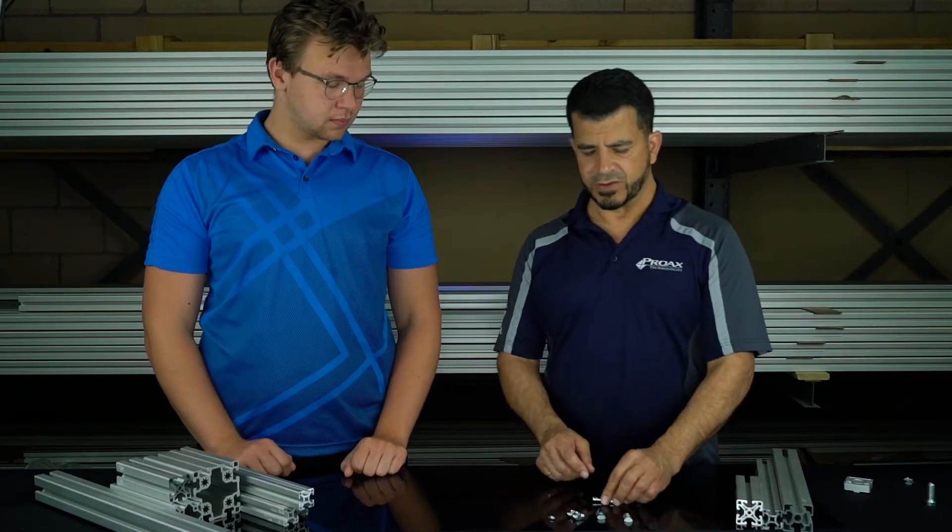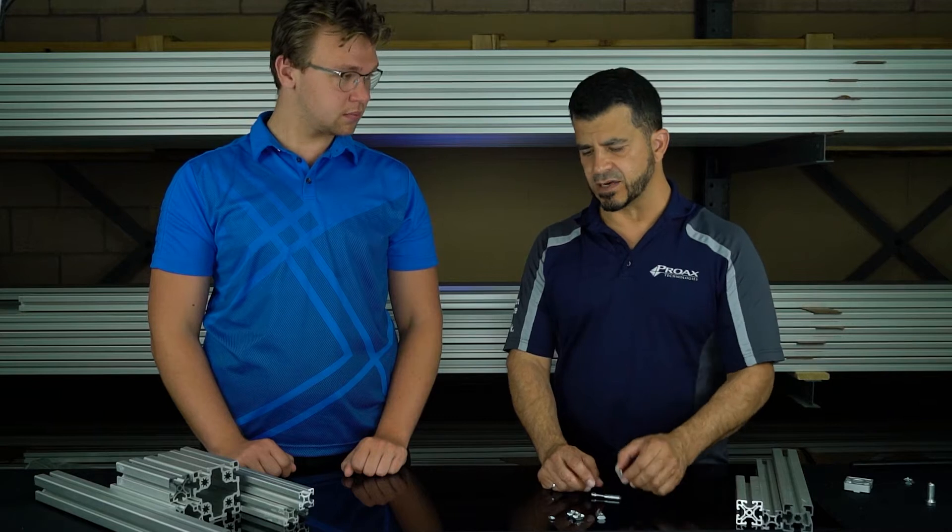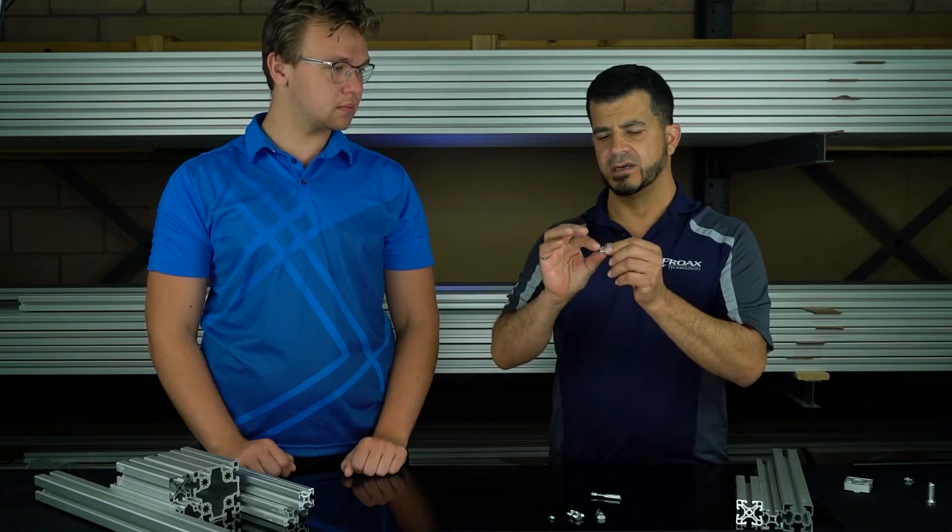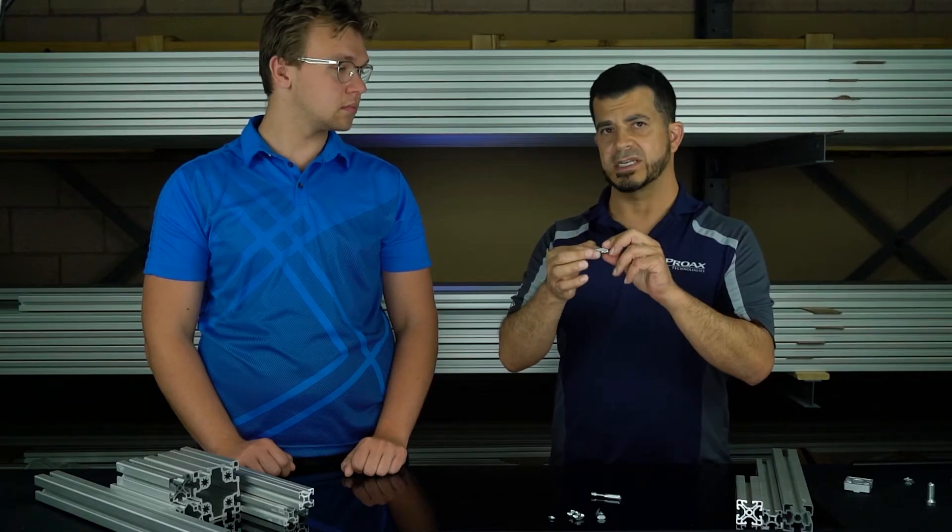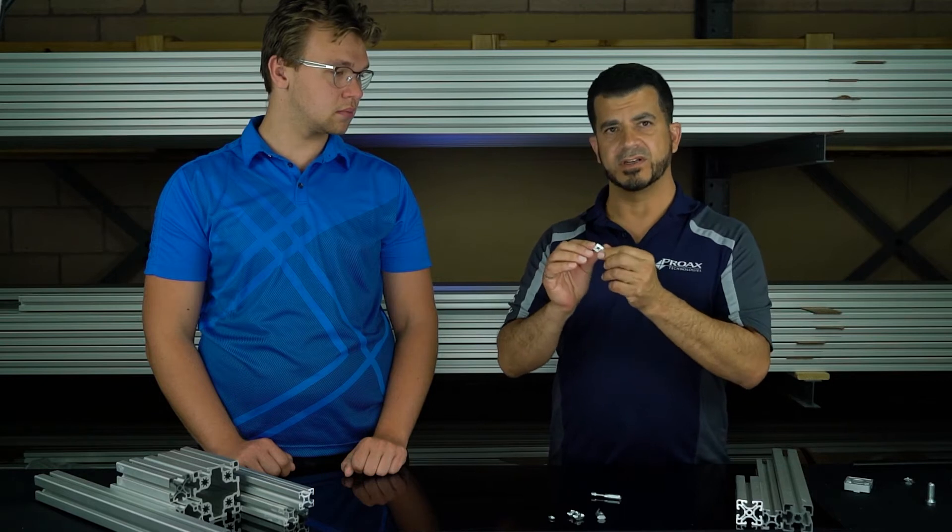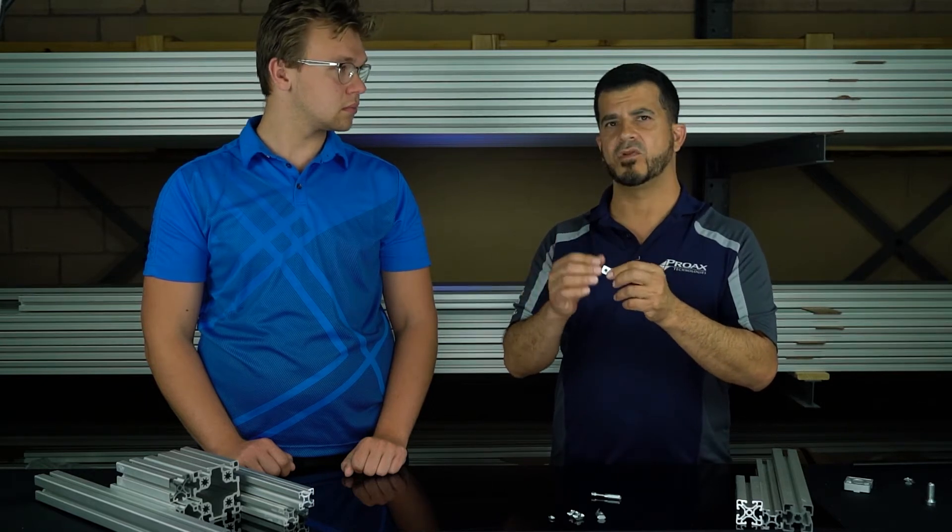There are different styles of T-nuts that we use. This is a ball style T-nut that uses a detent ball, a spring-loaded little ball, to hold it in place as a captive T-nut. They come in different sizes: M5, M4, M8.